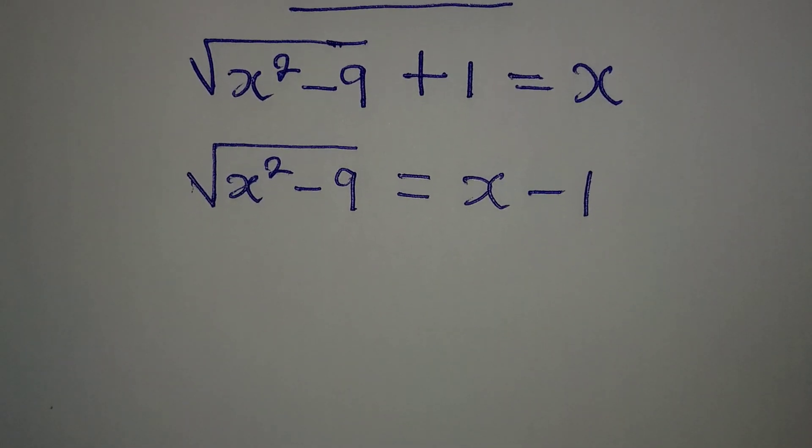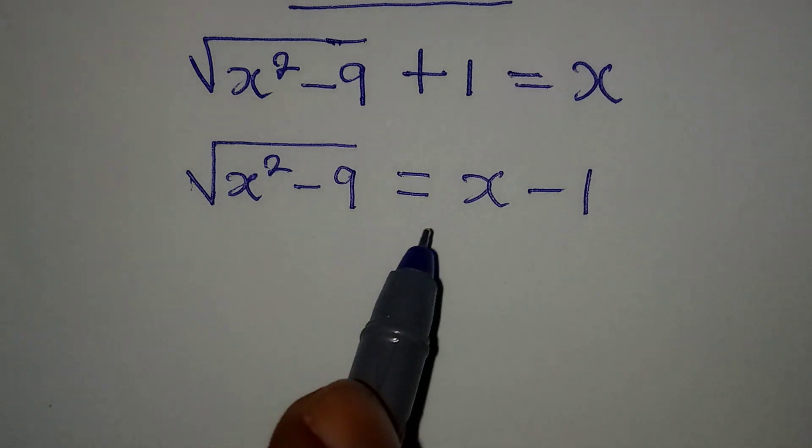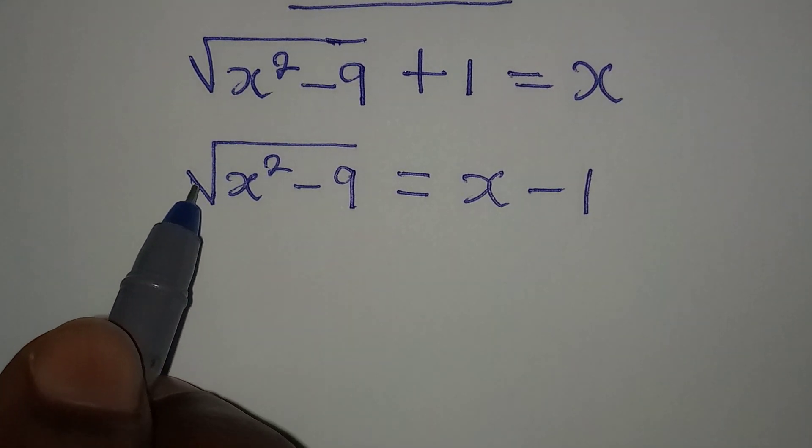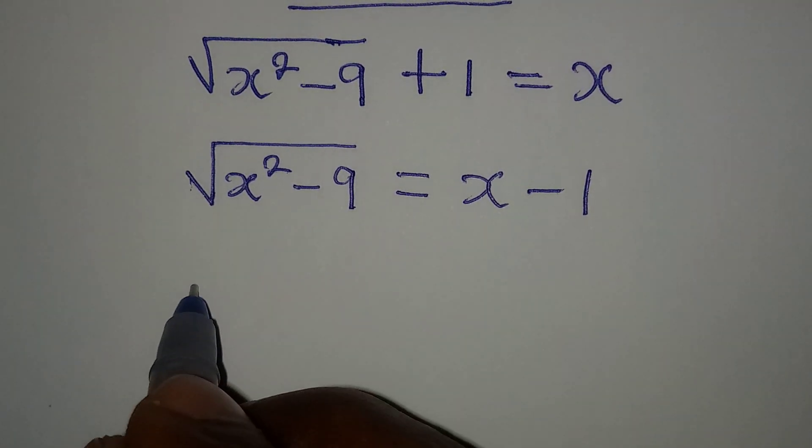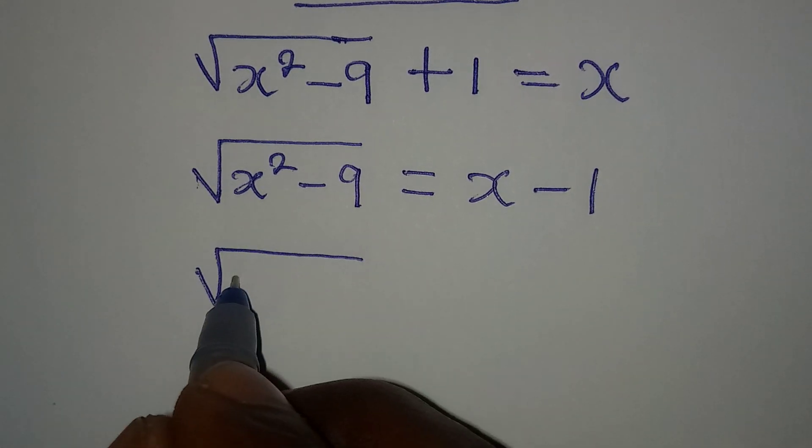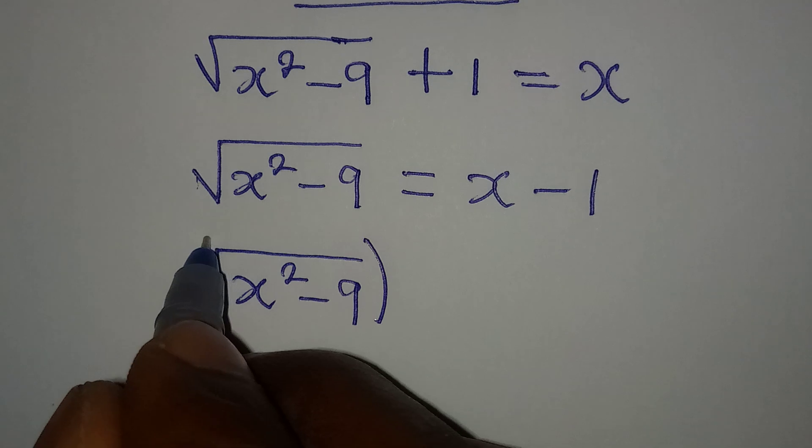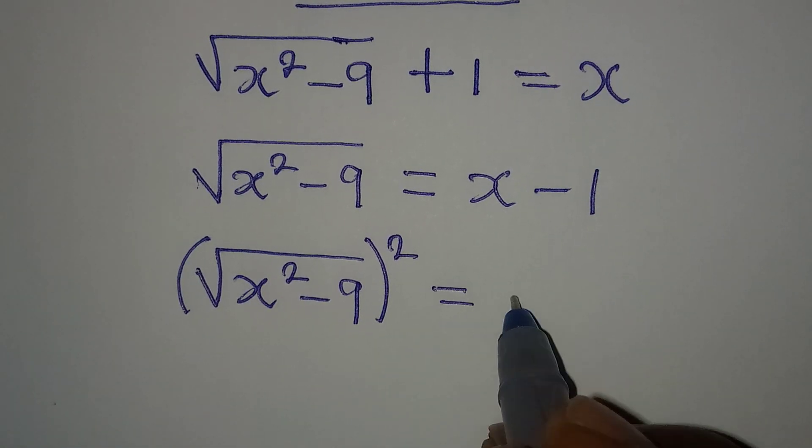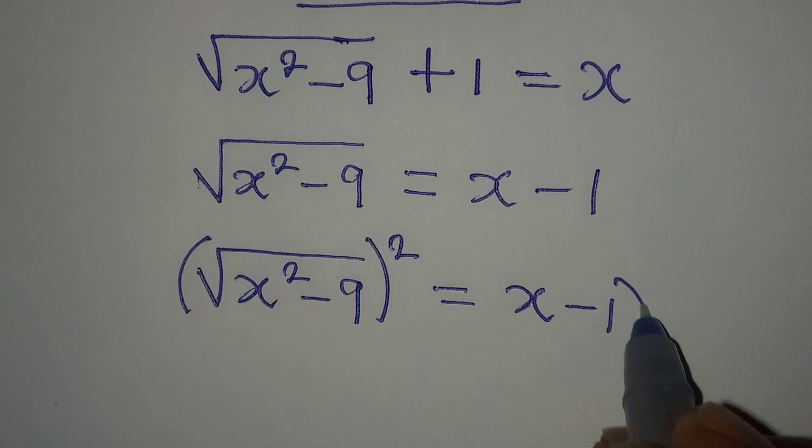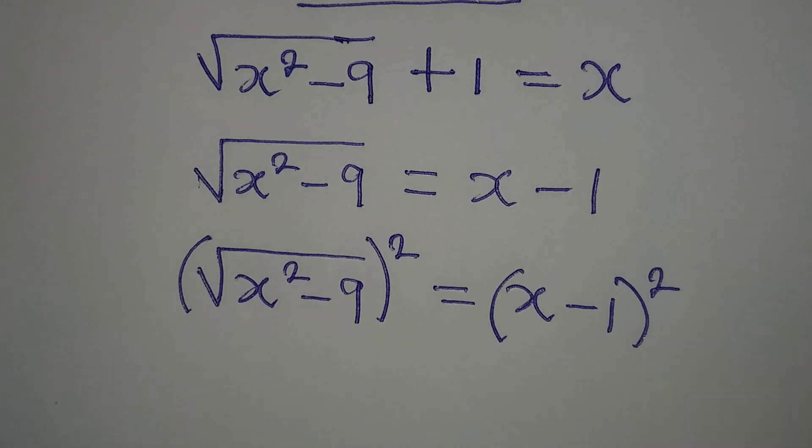Now the next thing we will do is to square both sides so that this square root can be gone. So we have square root of x squared minus 9 squared, and this will be equal to x minus 1 all squared.